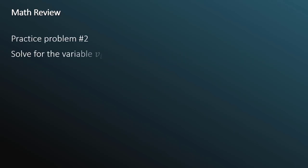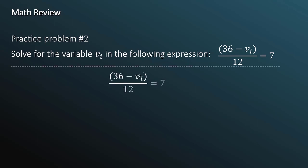Practice problem number 2. Solve for the variable v_i in the following expression: (36 - v_i)/12 = 7. First, we multiply both sides by 12. This leaves us with 36 - v_i = 84. Our goal is to isolate v_i. So our next step is to subtract 36 from both sides. This leaves us with -v_i = 48. We need to multiply both sides by negative 1 since there is a negative before the v_i. And we don't want negative v_i isolated. We want just v_i isolated. So multiply both sides by negative 1. This gives us v_i = -48, which is our answer.